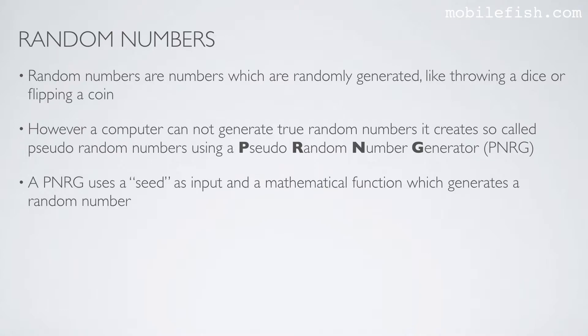A pseudo-random number generator uses a seed as input and a mathematical function which generates a random number. The seed is a relatively small number and a generated random number is usually a large number.